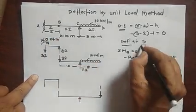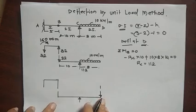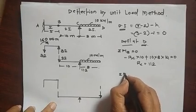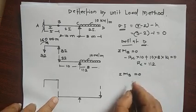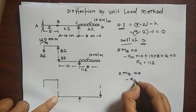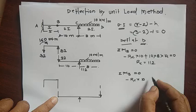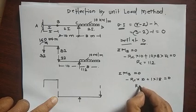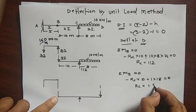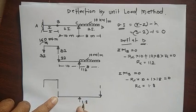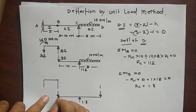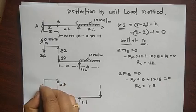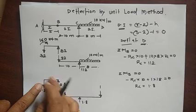Now to find the deflection at D, apply a unit force at D and simplify the beam again. Taking ΣMB = 0: minus RC × 10 plus 1 × 18 = 0, so RC = 1.8. Total upward load is 1, upward RC is 1.8, so downward reaction here is 0.8, and upward reaction on the other side is also 0.8.